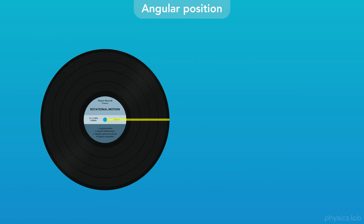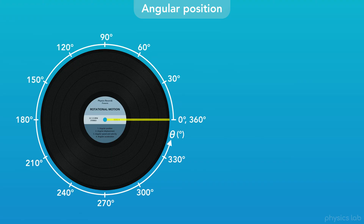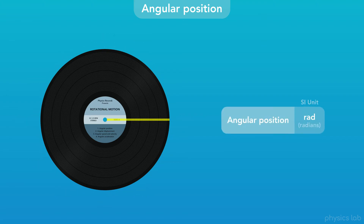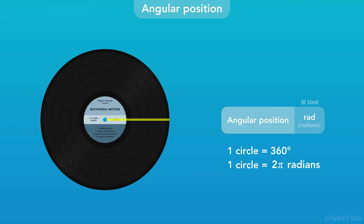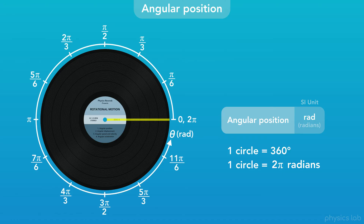Now let's talk about units. So far we've been using degrees, but there are a few other units we need to know. The SI unit for angular position is radians, RAD for short. Just like how there are 360 degrees in a circle, there are 2π radians in a circle. We learned about radians in the basics section, so watch that video if you haven't already. So if one circle is 2π radians, we can break that into fractions and label the axis. Here we're dividing the circle into 12 parts, so each segment adds π/6 radians. A radian is a unit that describes an angle, and there are 2π radians in one circle.